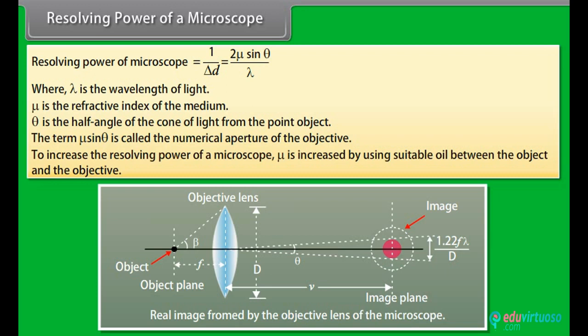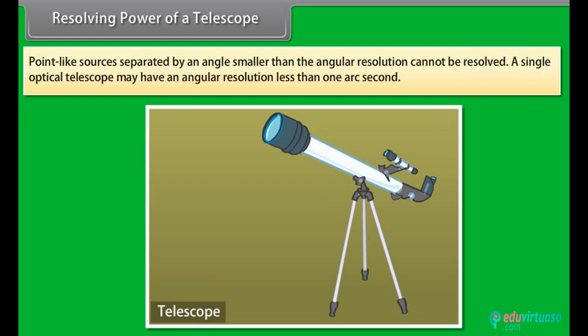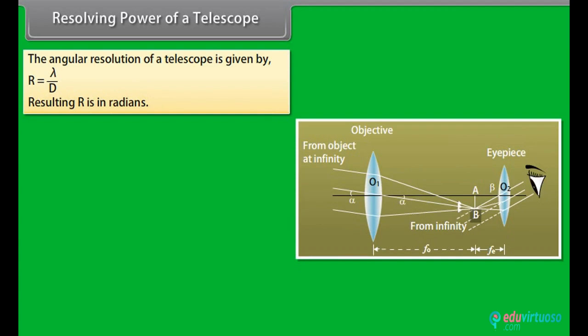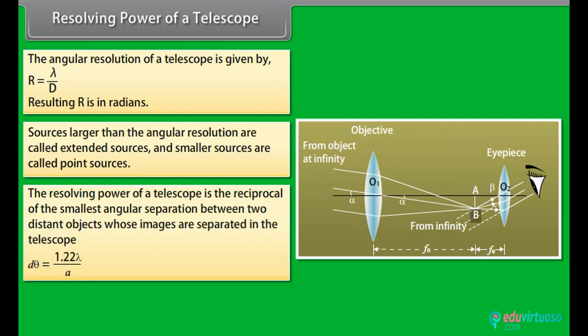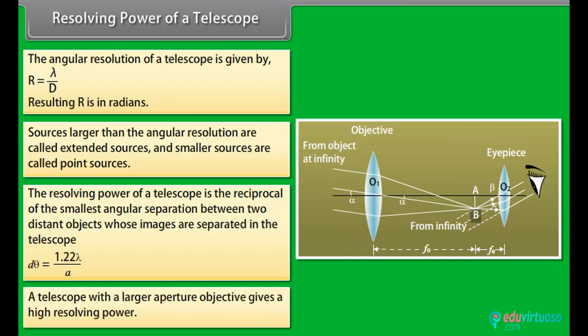Resolving power of a telescope: point-like sources separated by an angle smaller than the angular resolution cannot be resolved. A single optical telescope may have an angular resolution less than one arc second. The angular resolution is given by R = λ/D, where λ is the wavelength and D is the diameter of the objective. The resolving power of a telescope is the reciprocal of the smallest angular separation: Dθ = 1.22λ/A. A telescope with a larger aperture gives higher resolving power.